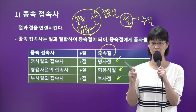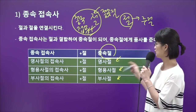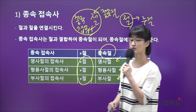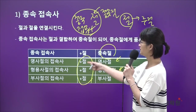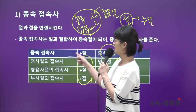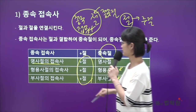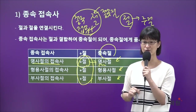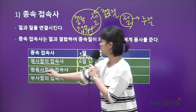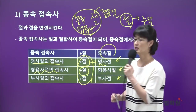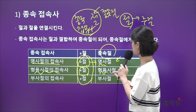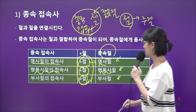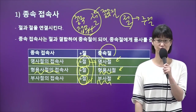명사절, 형용사절, 부사절. 그럼 이 종속절인 명사절과 형용사절, 부사절은 어떤 접속사와 결합이 돼서 이 종속절이 됐을까요? 앞에 있는 접속사의 명칭을 보시면 당연하겠죠. 명사절의 접속사와 절이 한 덩어리가 되면 이 절에게 명사라는 품사를 주는 거예요. 형용사절의 접속사와 절이 한 덩어리가 되면 그 절에게 형용사절이라는 품사를 주는 거고, 또 부사절의 접속사와 절이 한 덩어리가 되면 그 절에게 부사절이라는 품사를 주겠죠.